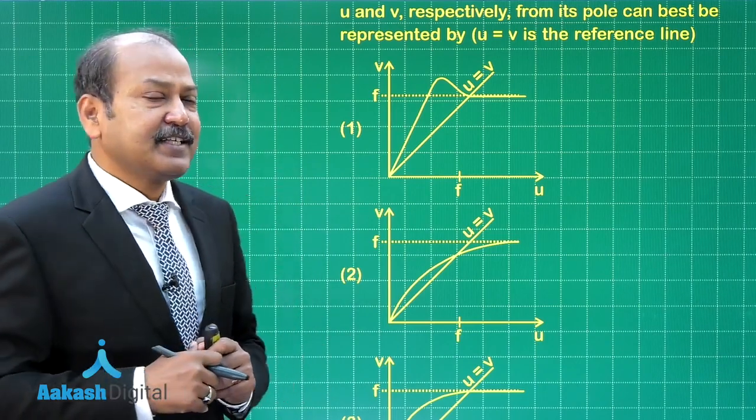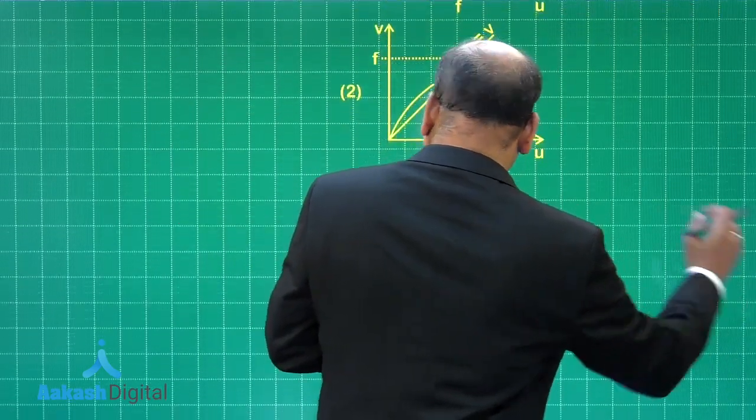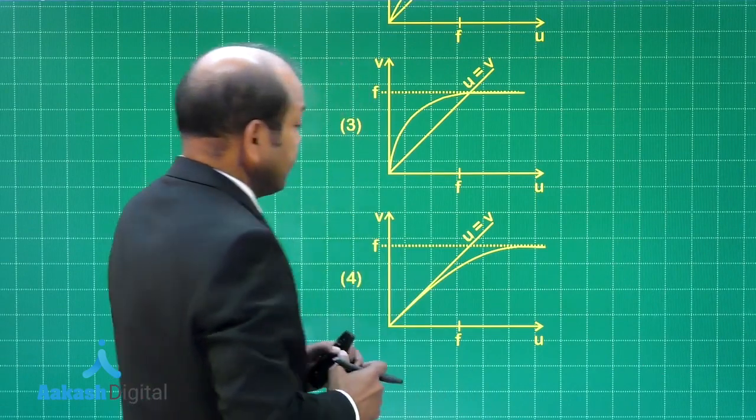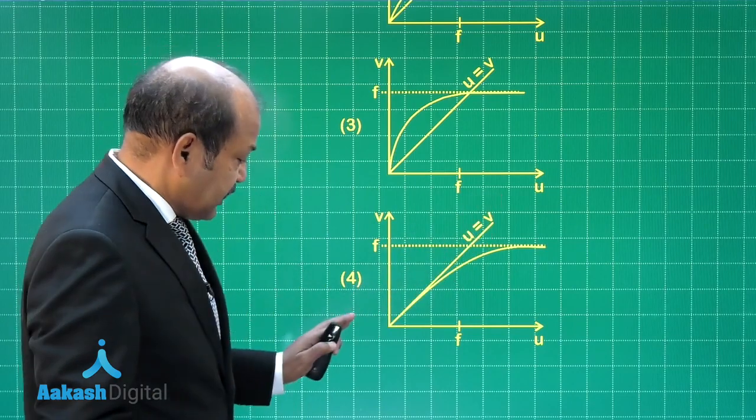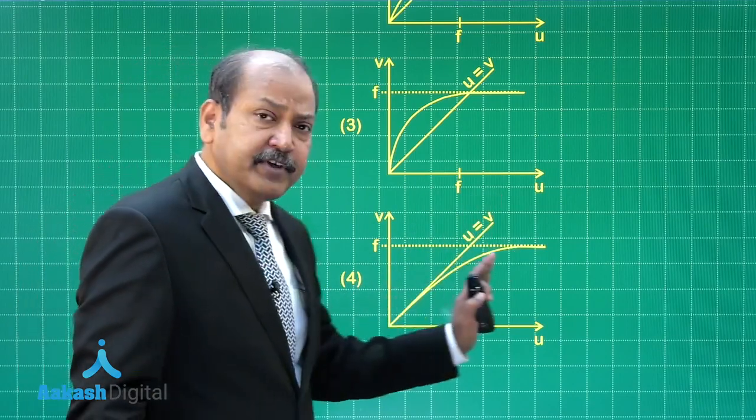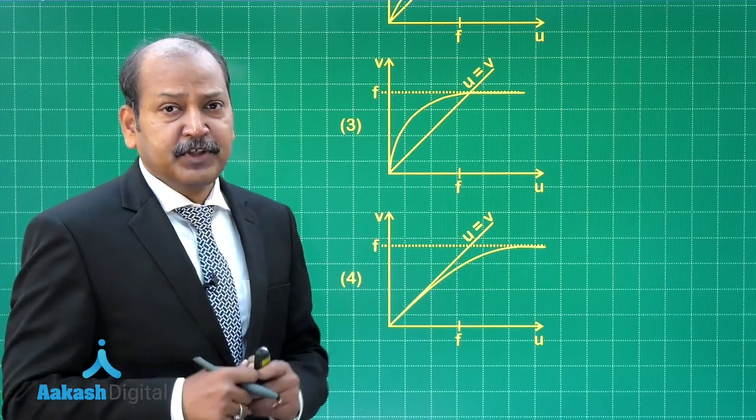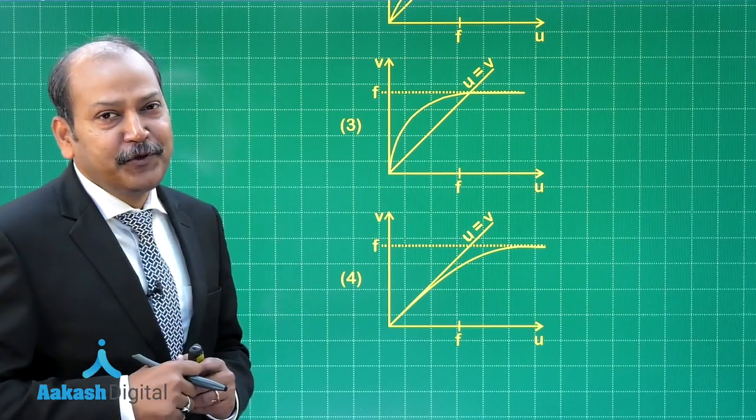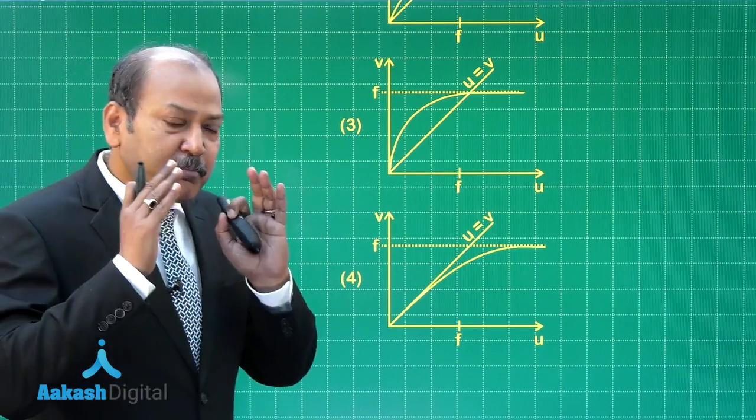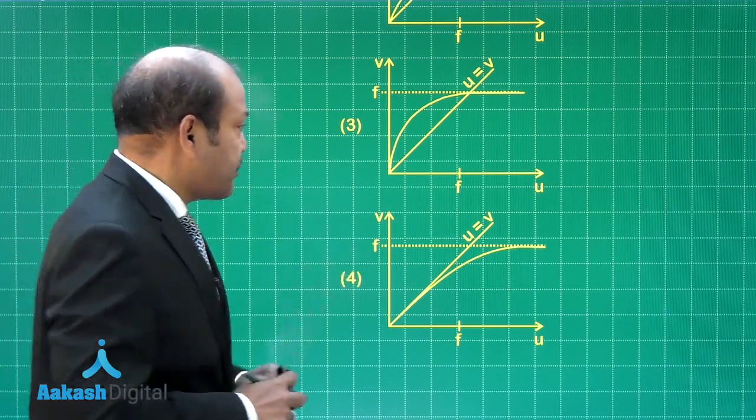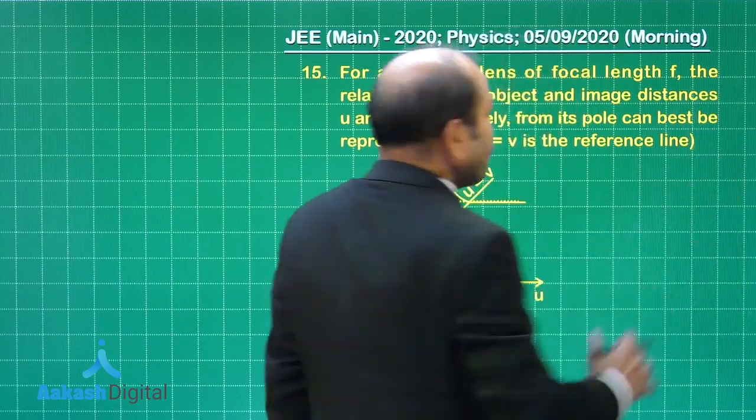If we consider all these factors, all these aspects, we can see that option 4 in fact is the correct option which combines all this. We have to just consider this as a reference line. The correct graph will be like this: as u tends to infinity, v tends to f, and u and v are of course equal at the 0 values, but at other values of u the value of v is less than the modulus of u. So option 4 is correct as far as this particular question is concerned. It is time now to go to question number 16.